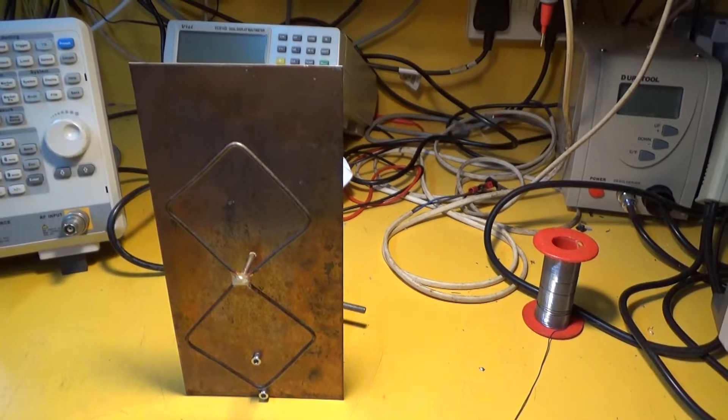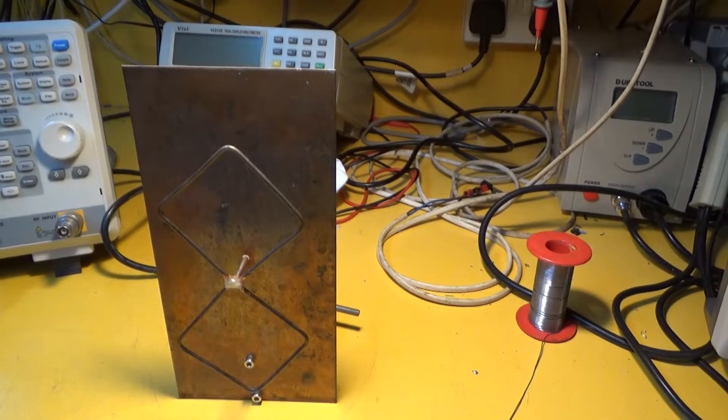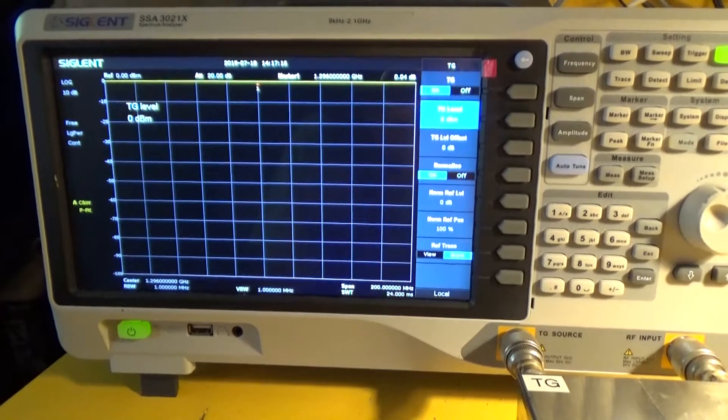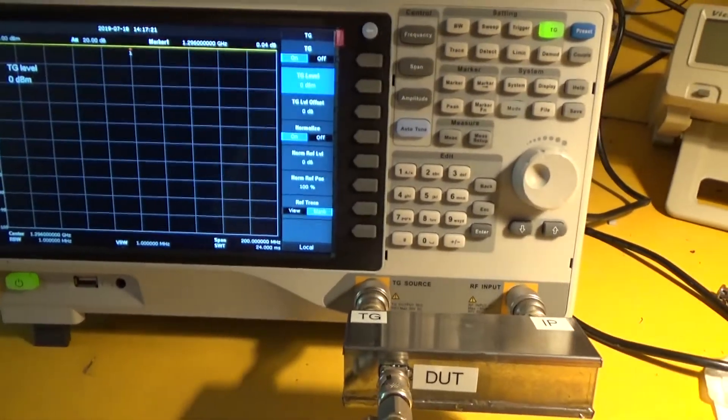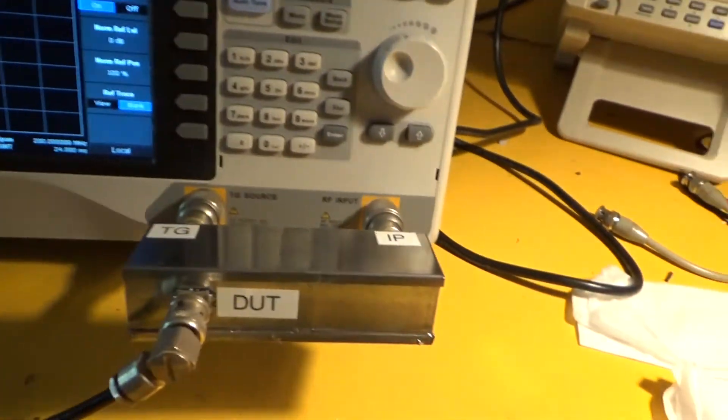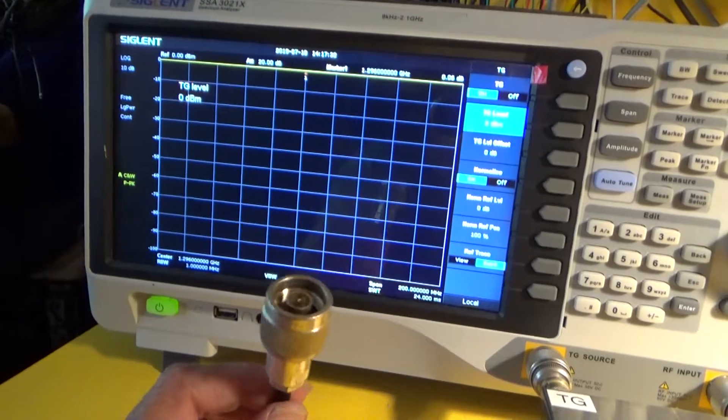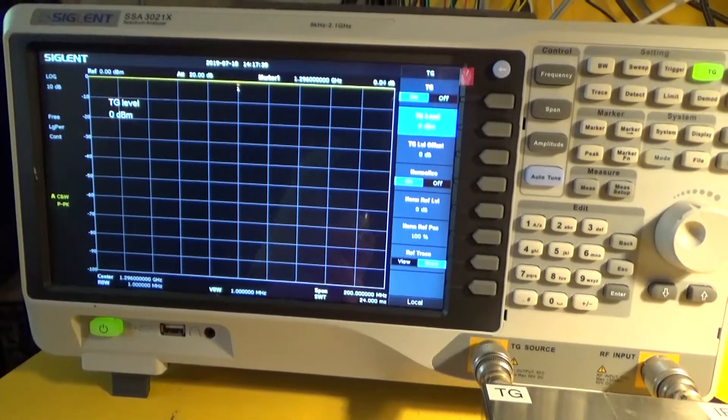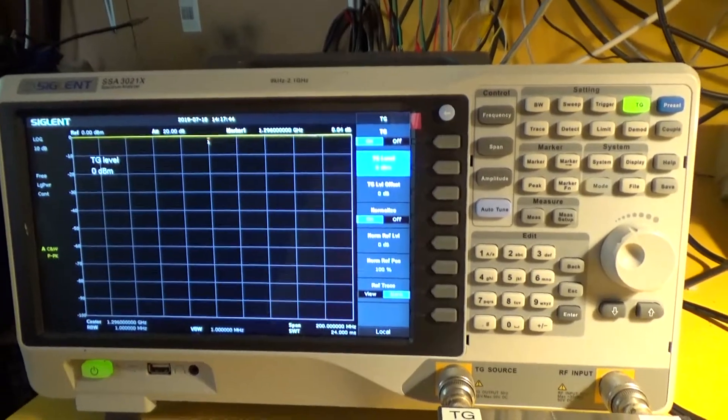I'm gonna show you the setup for doing that and the return loss measurement. So what I've done is I've connected up my spectrum analyzer which has a tracking generator output and I've got a return loss bridge connected and a bit of cable connected to that. I've normalized out the cable so I want to connect it up to the bi-quad and we'll see what we get on the screen.